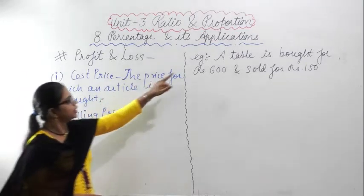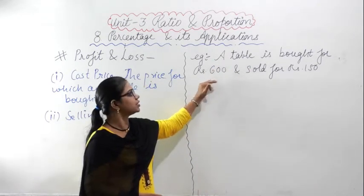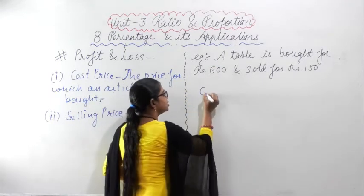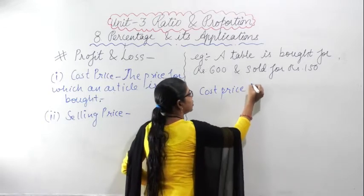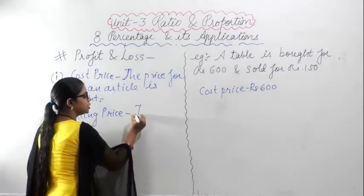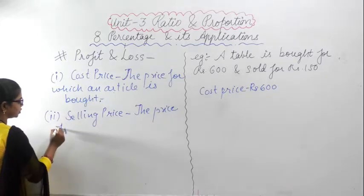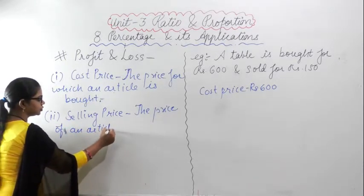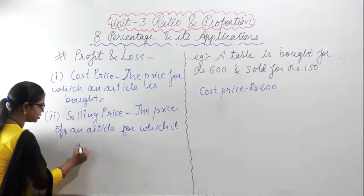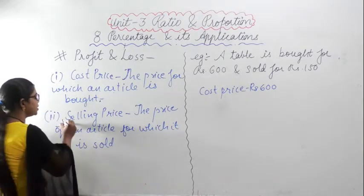For example, a table is bought for Rs. 600. So, Rs. 600 is the cost price. Similarly, what is selling price? The price of an article for which it is sold is known as the selling price of the article.